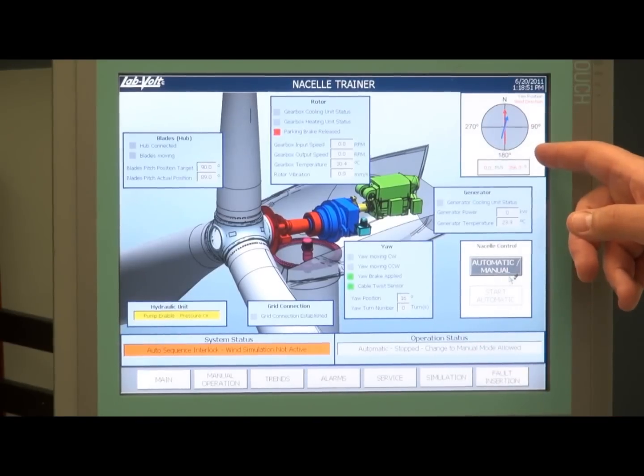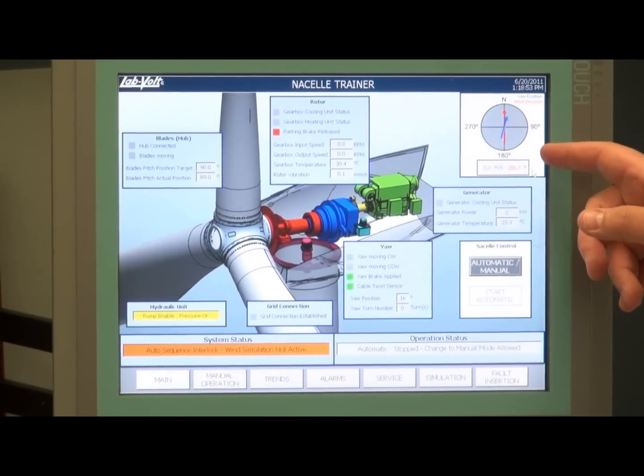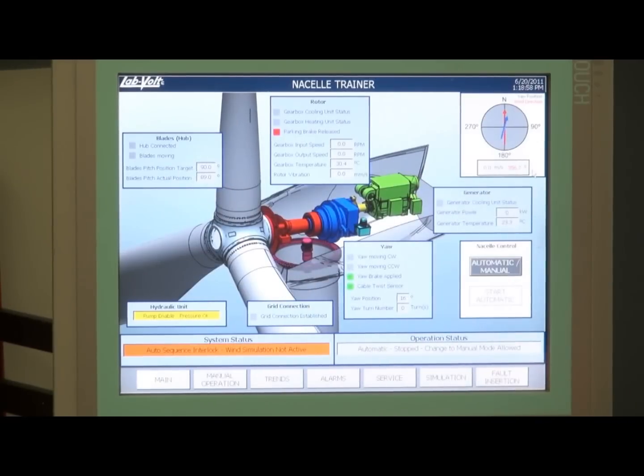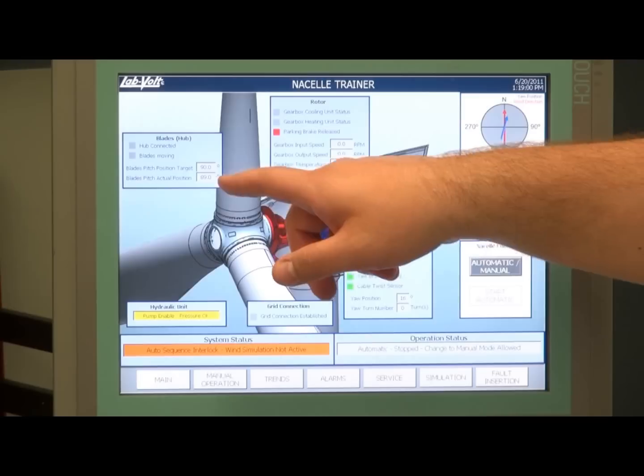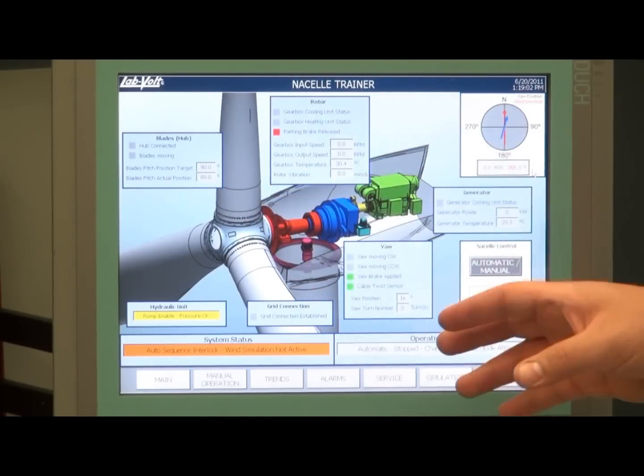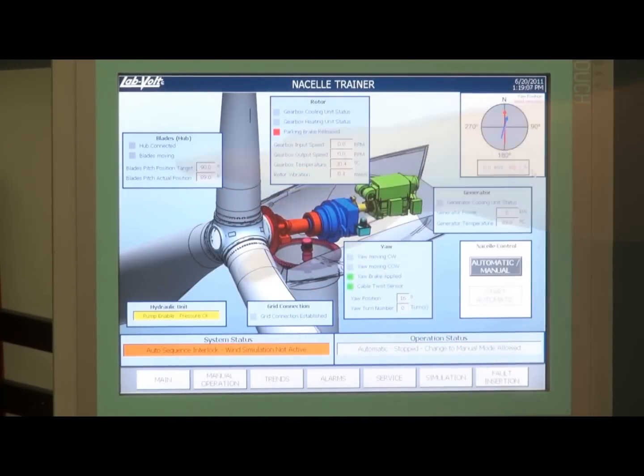You also see the wind direction in the actual nacelle position against the wind, the blade pitch position target and the actual position, and since the hub is simulated, this section is also simulated, the hydraulic unit status, and grid connection is also established, which is also simulated.